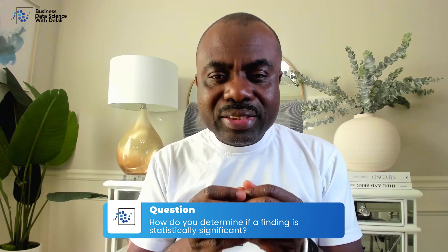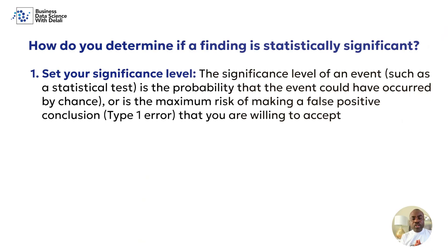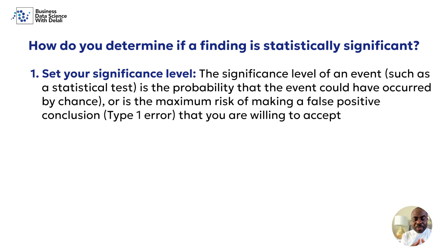So how do you know whether a result is statistically significant? First, you need to set up a threshold called the significance level. The significance level is the probability that an event or occurrence is due to chance. You need to set this up before you even conduct your experiment or research.